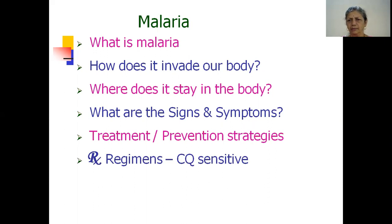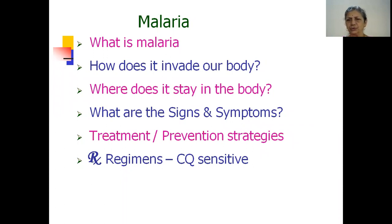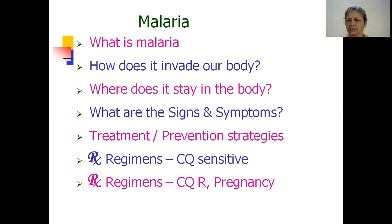Once we know the broad strategies to be employed, we will go on to study the actual drug regimens — what are the drugs available and how are they being used to treat or prevent malaria. By now we have many drugs for treatment of malaria, developed as a need because the primary drug chloroquine, used to treat all types of malaria for many years, now faces resistance. There are separate treatment strategies for chloroquine-sensitive and chloroquine-resistant malaria.